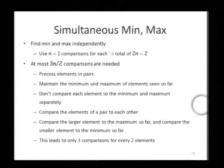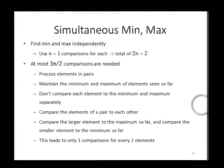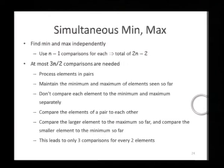This is two comparisons per element. There are n minus 1 elements that are compared against the minimum and maximum values, and therefore we perform 2n minus 2 comparisons. We are interested in coming up with a better algorithm which uses strictly fewer than 2n minus 2 comparisons, and we present an algorithm which uses at most 3n/2 comparisons.